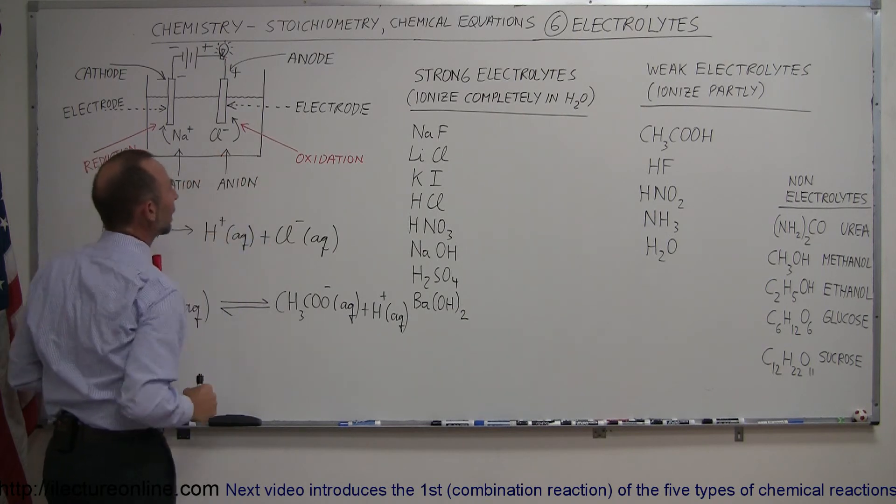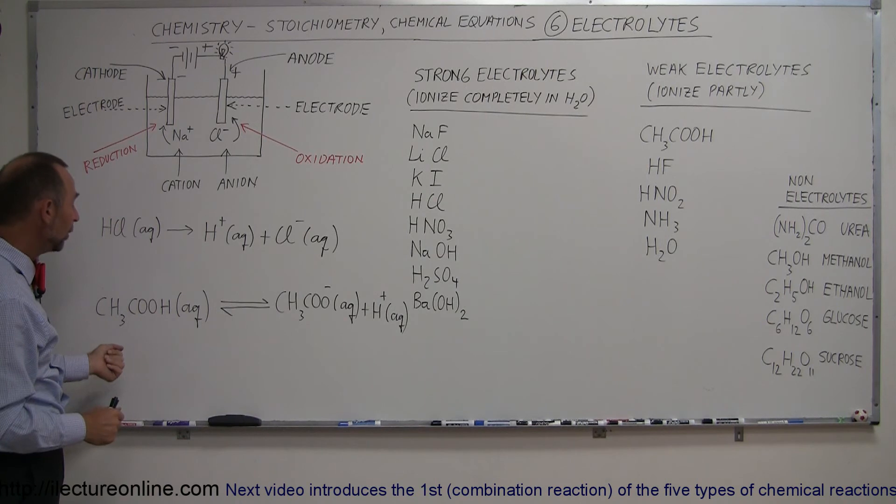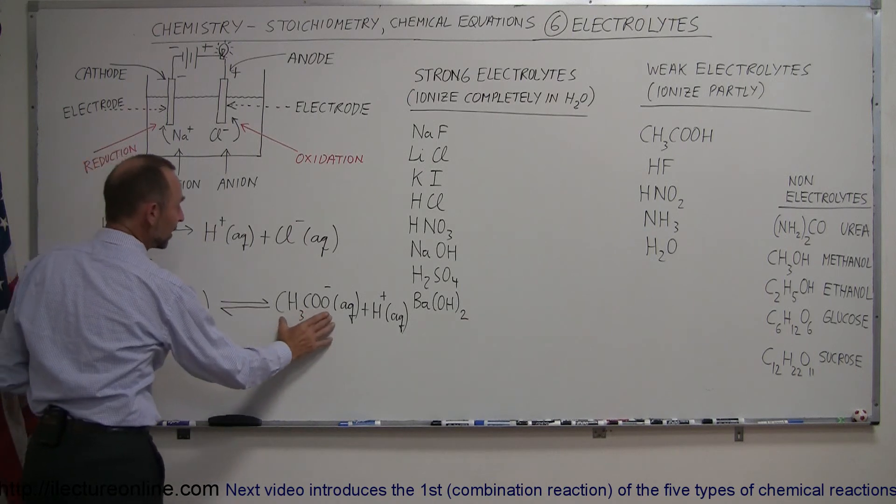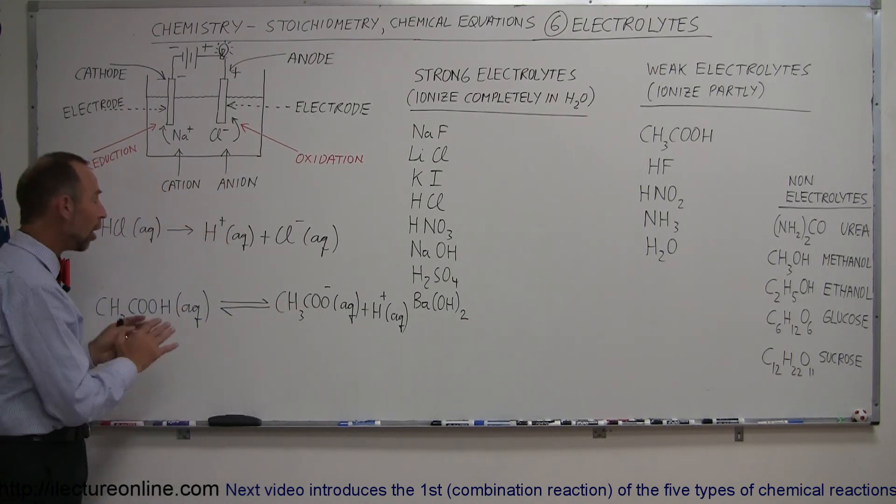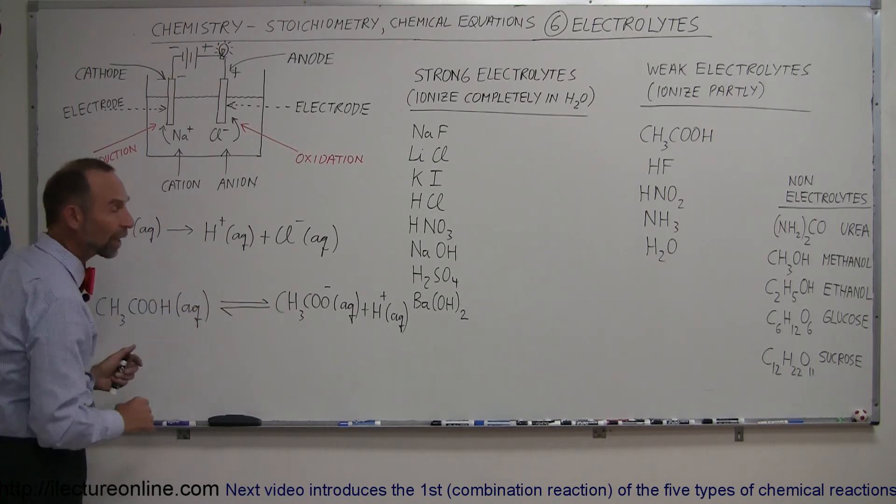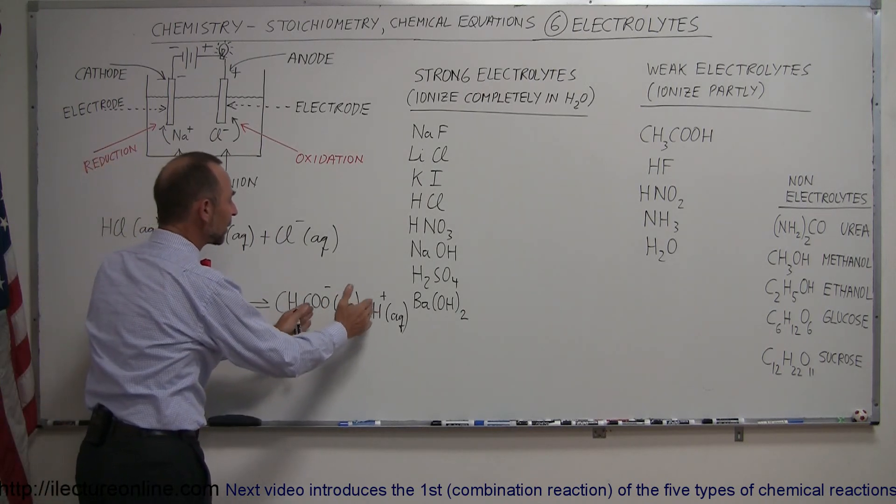But if we put acetic acid in water, what happens is this hydrogen will separate from the rest of the molecule, forming acetate ion and the hydrogen ion. But it doesn't do that completely. Not all of the molecules will do that, and therefore we have what we call a bidirectional reaction, which means some of them will react and become this, and some of those will join together again and turn into acetic acid molecules.